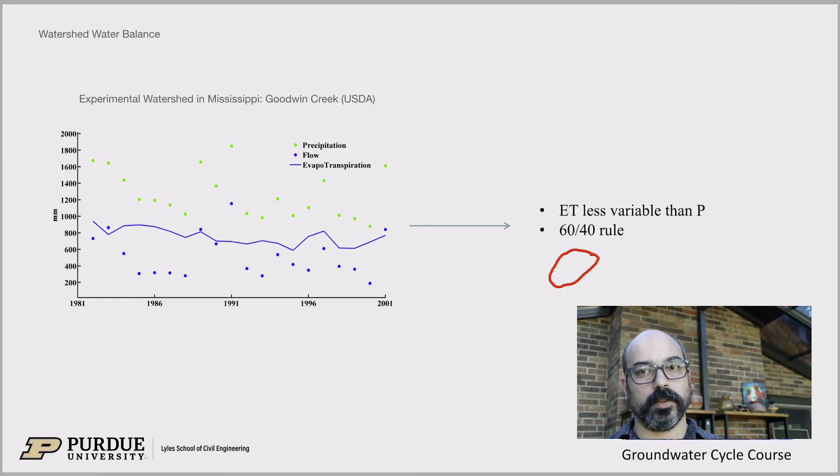Okay, so this is an example and sorry that green color is not very good on the slide, but this is data from a watershed in Mississippi. So it's a pretty small watershed, order 10 square kilometers, I believe, 10 to 20. So it's not very long, 10 miles by one or two miles. And again, the data is the precipitation in green. This is from 1982 up to 2002-ish, so 20 years of data. And in blue, you can see the flow, so the gauging station, the river flow at the outlet of that watershed.